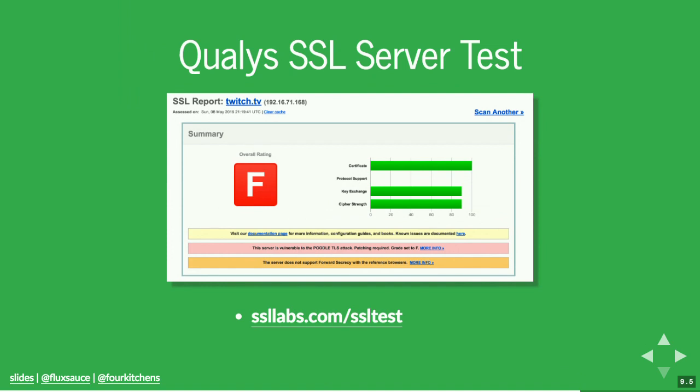The Qualys SSL Server Test does exactly that — it looks at your HTTPS configuration and actually looks at the certificates. In this particular case, it gets a giant F because this particular site has a known vulnerability in their certificate, so it gives recommendations around that. Run it on your own site. Getting an A doesn't mean your site is secure — it just means it's secure from these particular vectors at this time. Run it every once in a while just to make sure you're up to date and using the current recommendations.